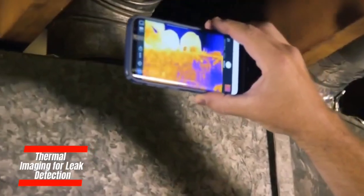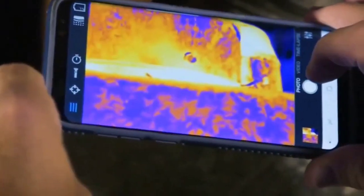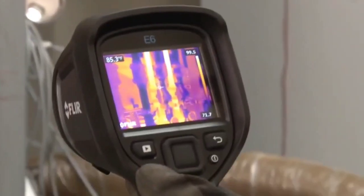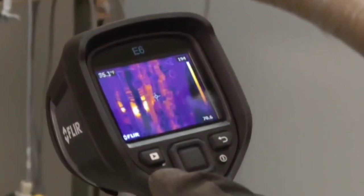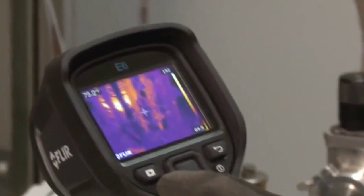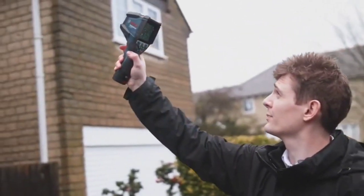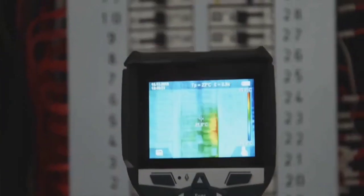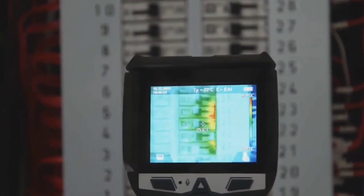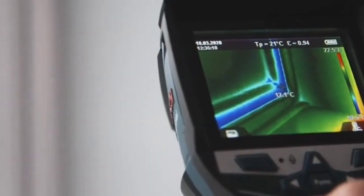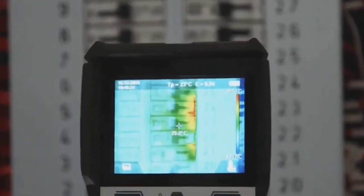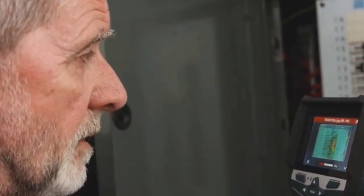Thermal imaging for leak detection utilizes infrared technology to pinpoint temperature variations and potential leaks within plumbing systems. This advanced technique allows for the non-intrusive identification of hidden issues that may lead to water damage or inefficiencies. By capturing thermal signatures, plumbers can quickly identify anomalies such as temperature fluctuations associated with water leaks.